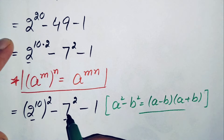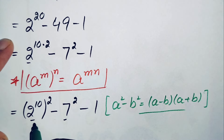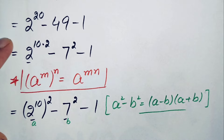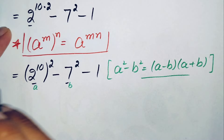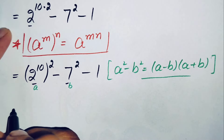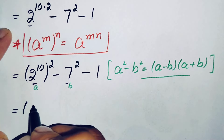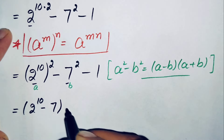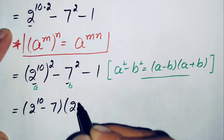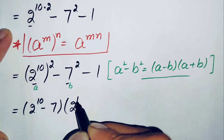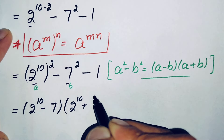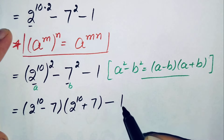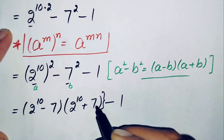The algebraic identity a squared minus b squared equals a minus b times a plus b. Applying this, where a is 2 raised to power 10 and b is 7, the equation becomes: 2 raised to power 10 minus 7, times 2 raised to power 10 plus 7, minus 1.